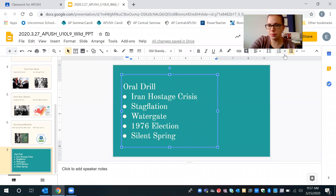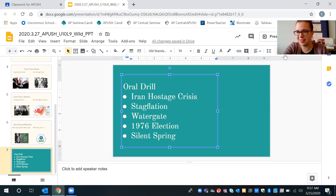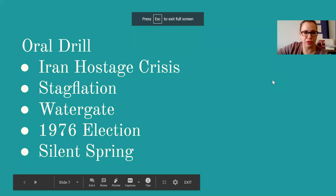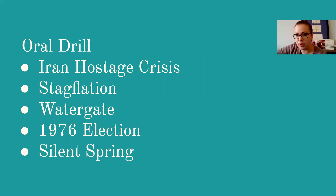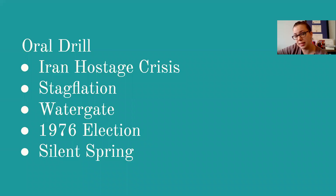I am back. Let me go ahead and share my screen. So these are your oral drill terms: the Iran hostage crisis, stagflation, Watergate, the 1976 election, and Silent Spring. You'll notice that all of these came from today's lecture, so if you did today's lecture, you know what the responses are. Make sure you take five minutes to do that — this is going to count towards your participation. Again, this exit ticket is a quiz grade. Take your time and be thorough. You have extra time because you don't have electives in the afternoon.